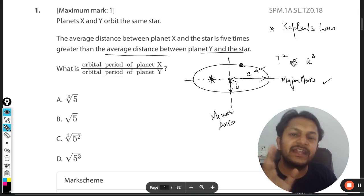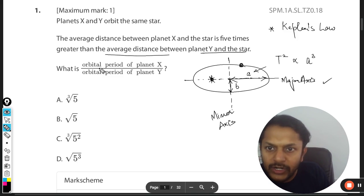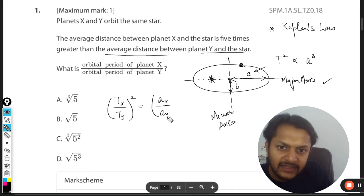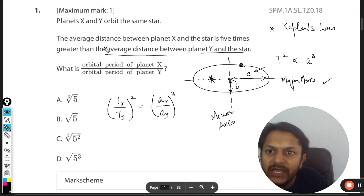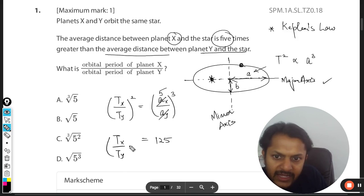Now Kepler's third law says that T² is directly proportional to a³. Accordingly, the orbital time period for X: it means that we want Tx divided by Ty whole square will be equal to ax divided by ay, and then we would be taking cube of it. Now it says that the average distance of planet X is five times the distance of Y. So ax is five times ay. This can be cancelled, so it means it will become 125.